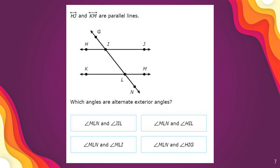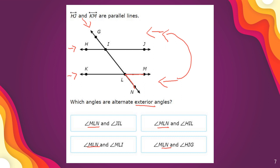In the next example, we have parallel lines HJ and KM, with the transversal line cutting through them. This time we're asked about alternate exterior angles. Exterior means I'm going to be looking on the outside — either the top section or the bottom section. The first angle given is MNL. For the alternate exterior angle, it needs to be on the opposite side of the transversal line and on the opposite exterior region. Since MNL is at the bottom, I need an angle at the top on the opposite side. That gives us angle HIG. So the answer is angle MNL and angle HIG.